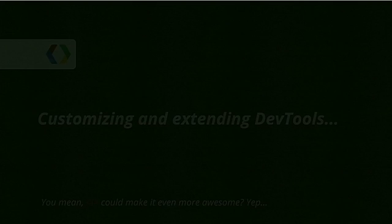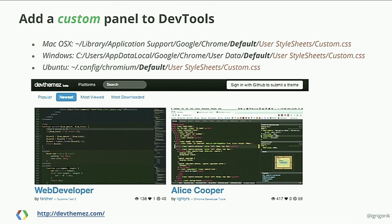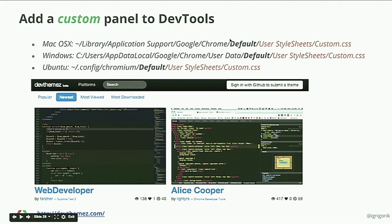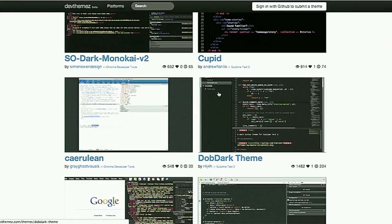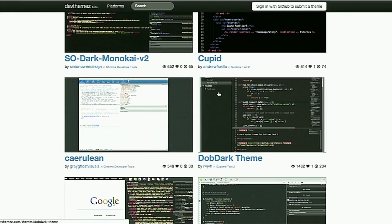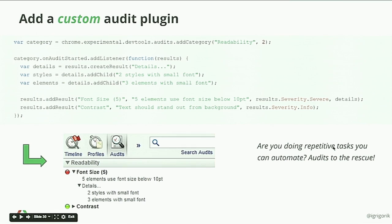Moving to customization — this is my favorite. I've spent way too much time customizing text editors. It's a great joy to discover you can do the same in DevTools. DevTools is a web app, and you can navigate to the user stylesheets folder for your profile and provide your own CSS to restyle DevTools to match your color schemes. There's also DevThemes.com with a compilation of themes you can drag and drop in for different looks.